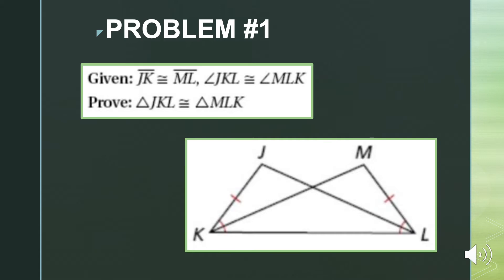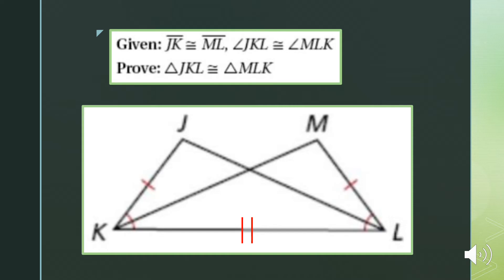Problem number one. We were given that line segment GK is congruent to line segment ML. We were also given that angle JKL is congruent to angle MLK, and we need to prove that triangle JKL is congruent to triangle MLK. We need three corresponding parts, but we only had two, so our third corresponding part is the reflexive property: KL is congruent to itself.